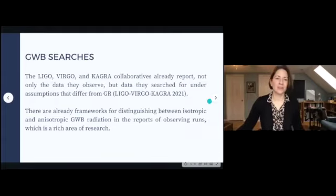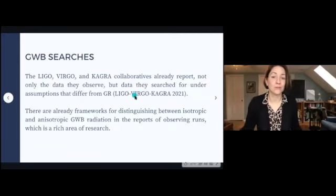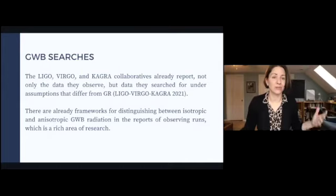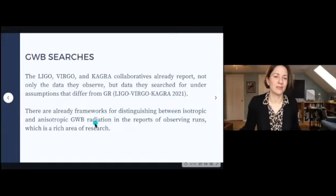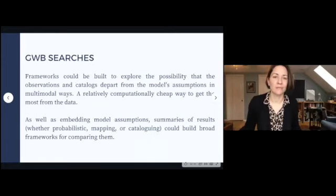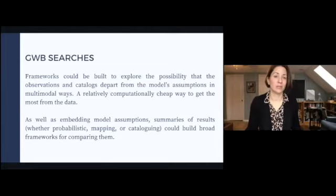The LIGO, Virgo, and CAGR collaboratives already report not only the data they observe, but data that they searched for under assumptions that differ from general relativity. The recent report of the first three observing runs includes that kind of inference. There are also already frameworks for distinguishing between isotropic and anisotropic GWB radiation, which is itself a rich area of research. In all these searches for background radiation, frameworks could be built to explore the possibility that observations and catalogs depart from model assumptions in multimodal ways.